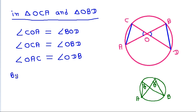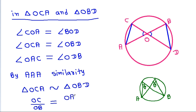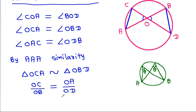So by angle-angle-angle similarity, triangle OCA is similar to triangle OBD. Therefore OC/OB = OA/OD, and cross-multiplying, OC times OD equals OA times OB.